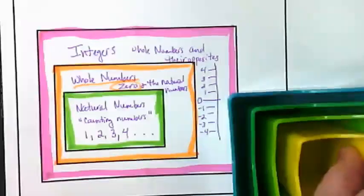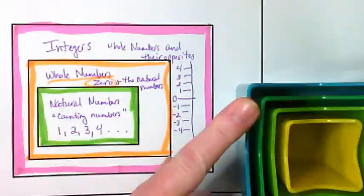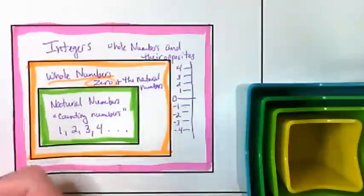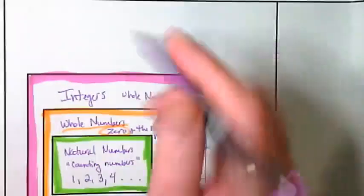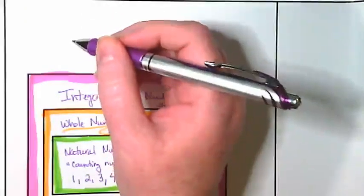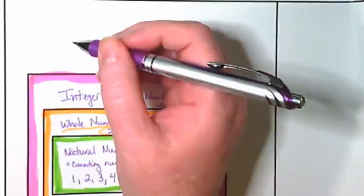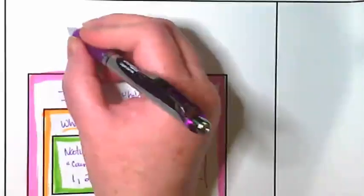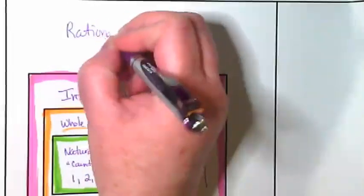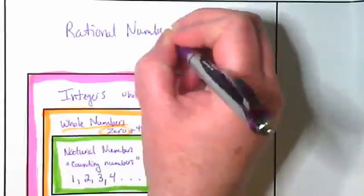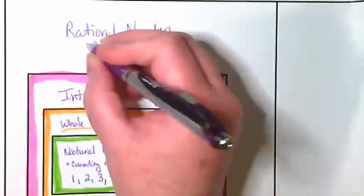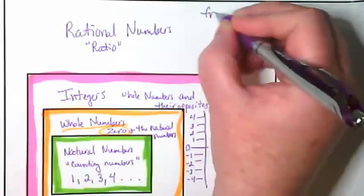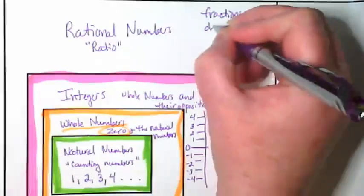And then we complete our set. The biggest set is the numbers that we think of in between the numbers on a number line. What goes in between the numbers on a number line? Fractions go in between. What else goes in between? Decimals. We call these the rational numbers. Rational numbers include the word ratio in them. And they include fractions and decimals.